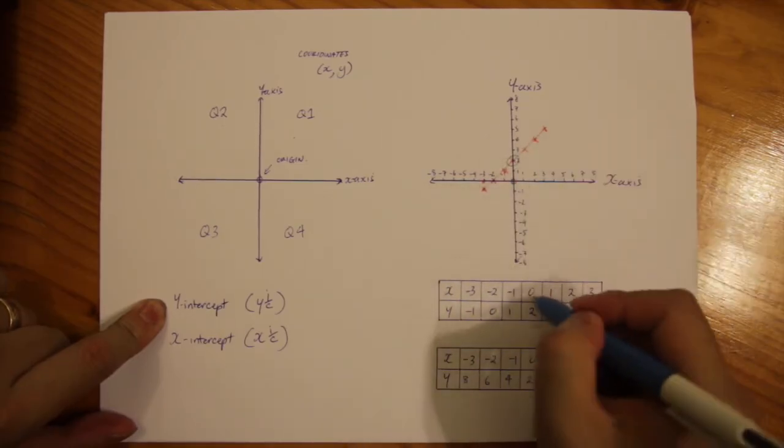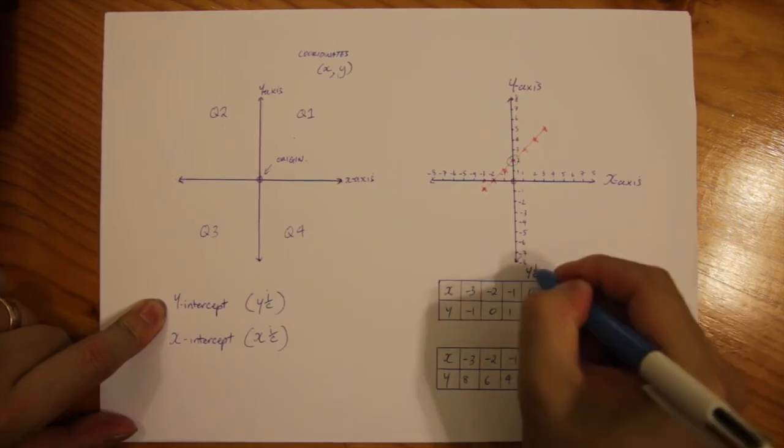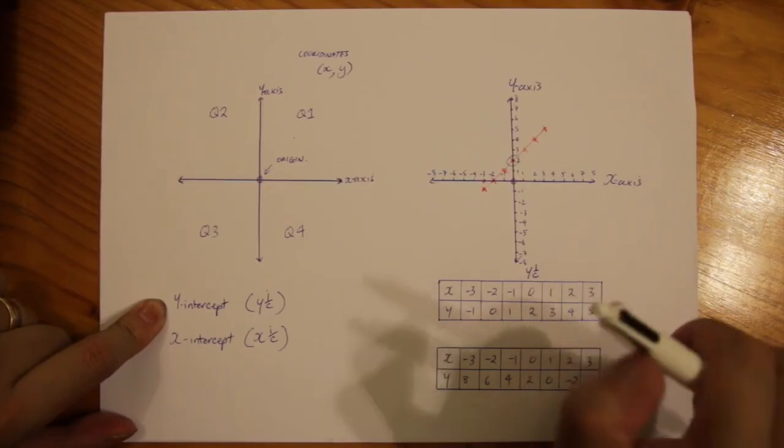So, when x is 0, y is 2 I'm going to label this as my y-intercept here. I'll mark it with a green.